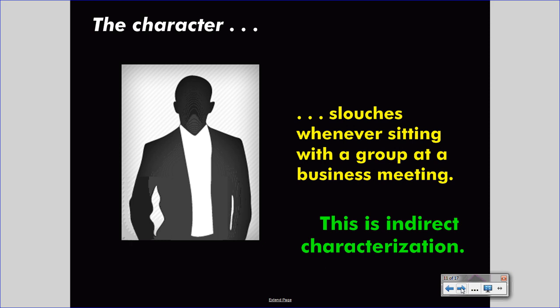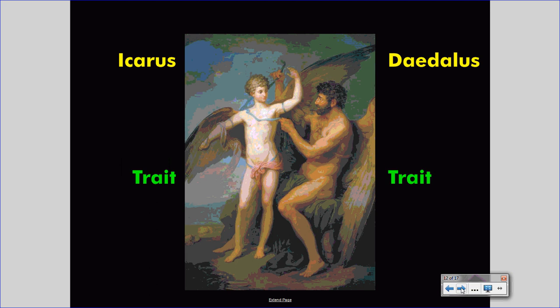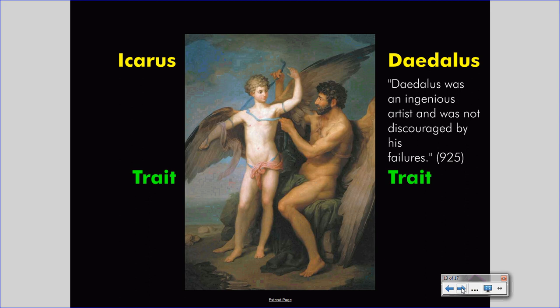Let's take an example from our own literature — the Flight of Icarus. We have two characters: Icarus the son, and Daedalus the father. What traits do these characters demonstrate? Let's look at Daedalus first. 'Daedalus was an ingenious artist and was not discouraged by his failures.' Obviously that is direct characterization — the author is coming right out and telling you about the traits. The traits could be brilliance or persistence, or both. When determining a trait for a character, you should use single words that describe those character traits — 'brilliance' or 'persistence.' Those are nouns describing a quality that Daedalus has. You could make them adjectives: 'Daedalus is brilliant' or 'Daedalus is persistent.' Single words that accurately describe traits are necessary to writing and talking about characterization properly.